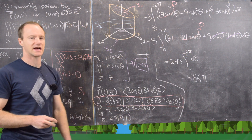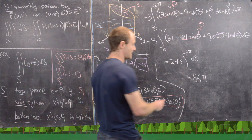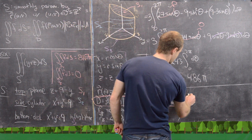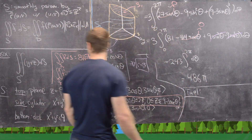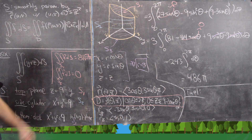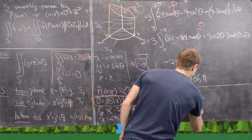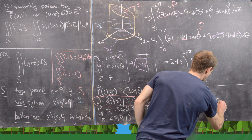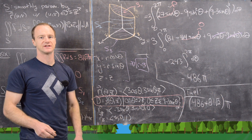So the surface integral over S2 is 486π. The final answer is the sum of all three surface integrals: the S2 contribution of 486π, the S1 contribution of 81√2 π, and the S3 contribution of 0. So the total is (486 + 81√2)π. That finishes this video.